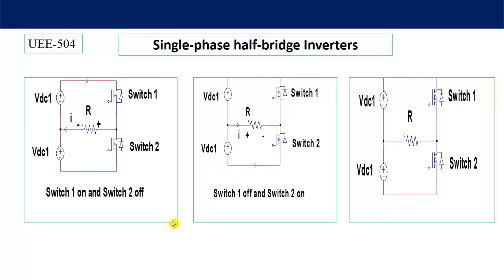Let's start with the single-phase half bridge inverter. In this circuit diagram you can see switch one, switch two, two voltage sources VDC1 and VDC2 — both of the same magnitude — and a resistive load. When switch one is on, switch two is off, and current flows in one direction. When switch two is on, current flows in the opposite direction, giving positive and negative voltage across the resistance. The total input voltage equals VDC1 plus VDC2, which is twice VDC1, but the output voltage is half of that — VDC1 — which is why it is called a single-phase half bridge inverter.